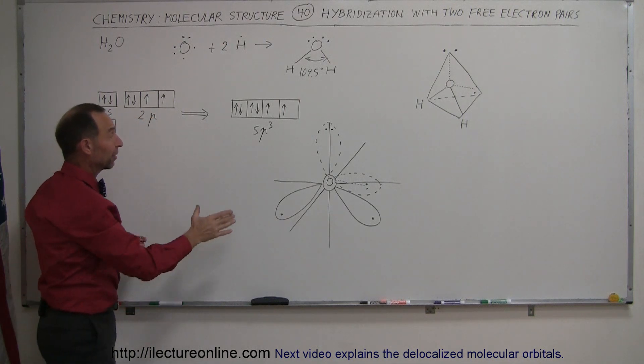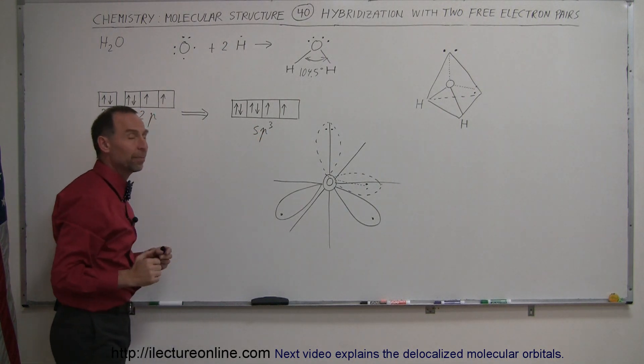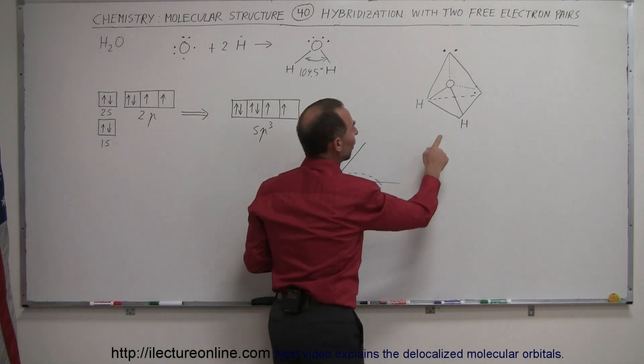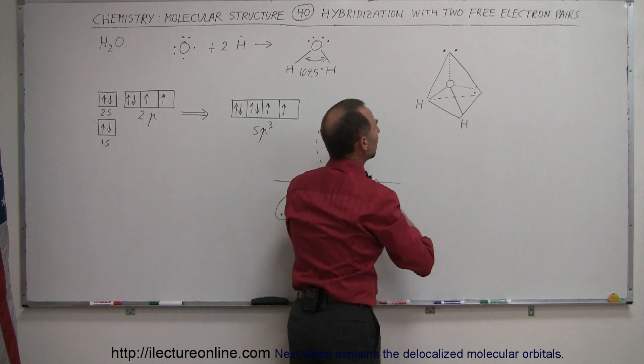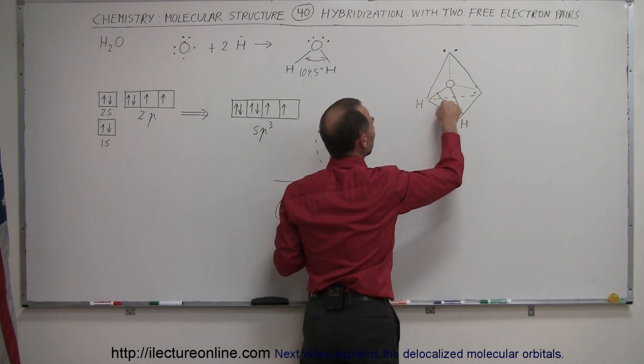And as we know, sp3 forms a tetrahedral shape. So what happens is that two of the orbitals will come out here at a 104.5 degree angle.